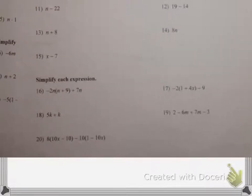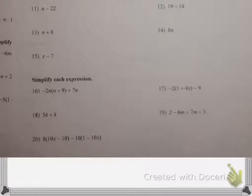We have negative 2, negative 2 times 1, which is negative 2. Negative 2 times 4x, which is negative 8x, because a negative times a positive is a negative. And then we have the negative 9 hanging out over here.